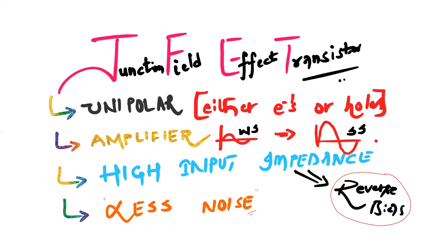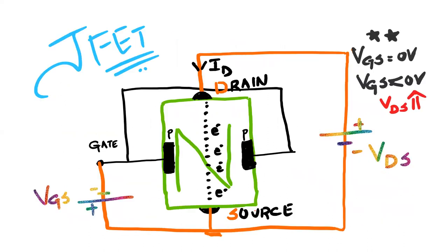Now let's specifically look at JFET, particularly the N-channel JFET diagram. I've chosen a green-colored channel here. In the middle of this channel, I dope with the opposite type semiconductor — P-type — on both ends, and both ends are connected to one terminal called the gate. This entire channel has a starting point called source and an ending point called drain, with ohmic contacts shown in black.